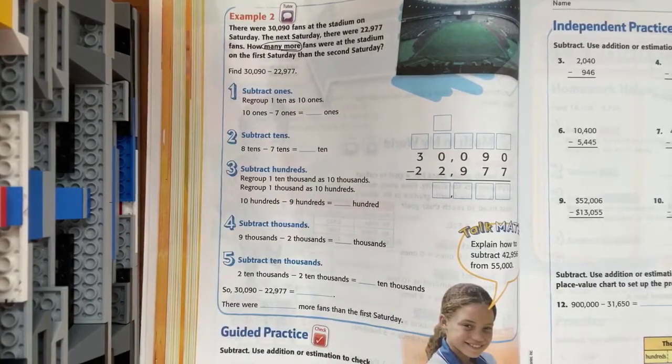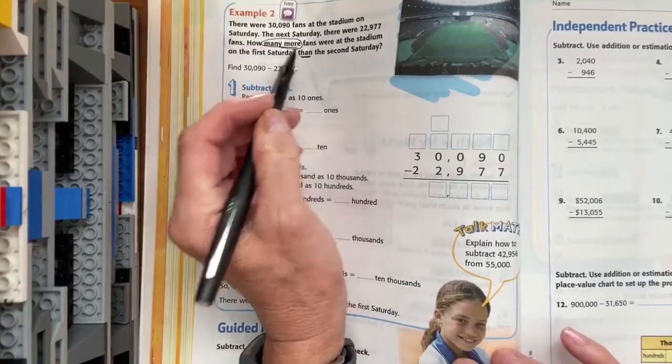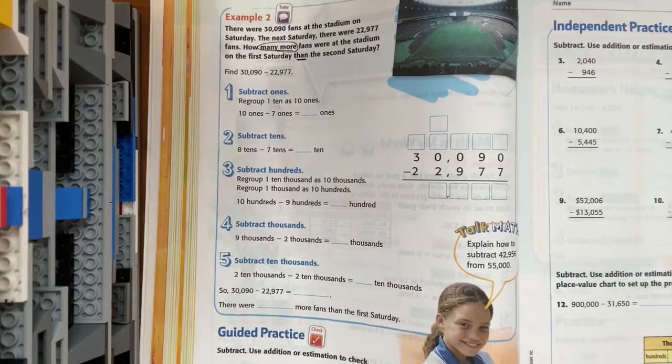We're at the stadium on the first Saturday than the second Saturday. They are comparing. That's what that word than is there for to show us that we're going to compare.